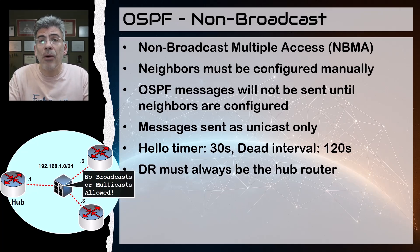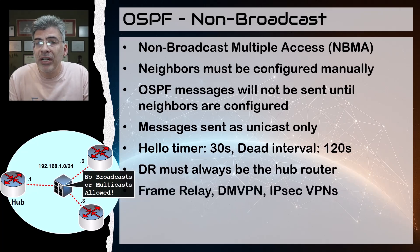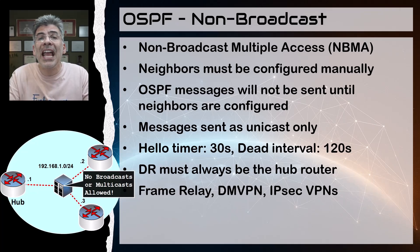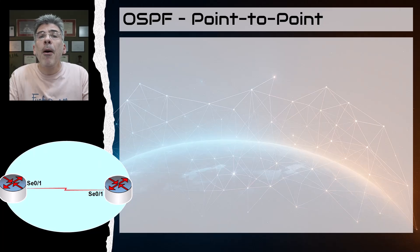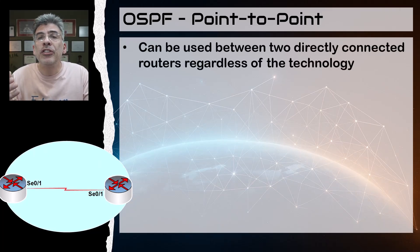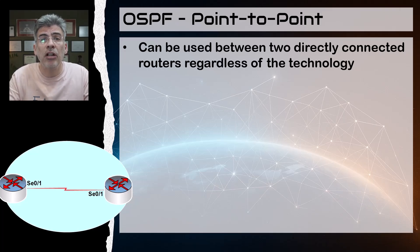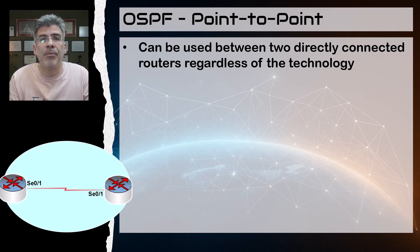This results in the hub becoming the DR, and there will actually be no BDR in such a topology. The non-broadcast network type is typically used for the physical interfaces of a frame relay topology, but it can also be used for other non-broadcast multi-access networks such as DMVPN or a hub-and-spoke IPsec VPN setup. Next, let's look at the point-to-point network type, which is used between two directly connected routers regardless of the underlying communication technology. You can configure this on Ethernet links, for example, and it will work as long as you only have two devices on the link.